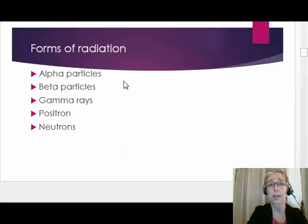The forms of radiation we will consider are alpha particles, beta particles, gamma rays which is a type of electromagnetic radiation, and positrons and neutrons, both of which are particles.